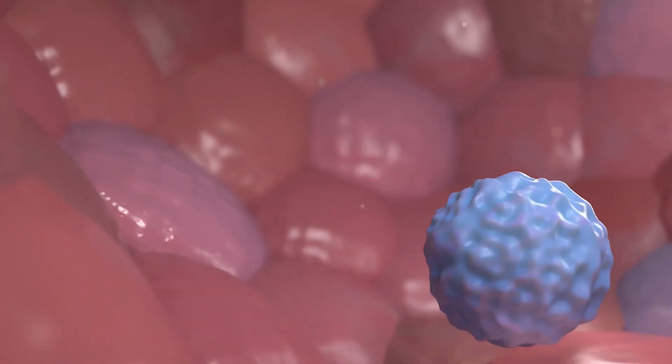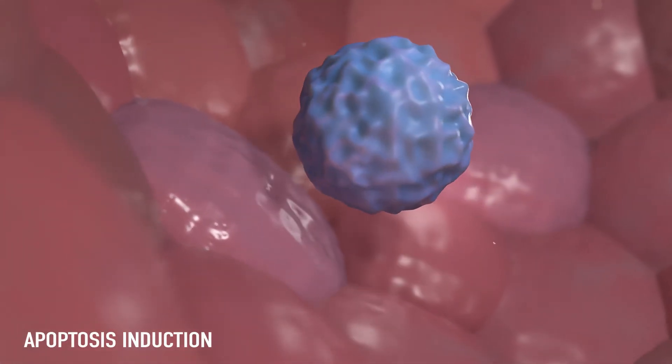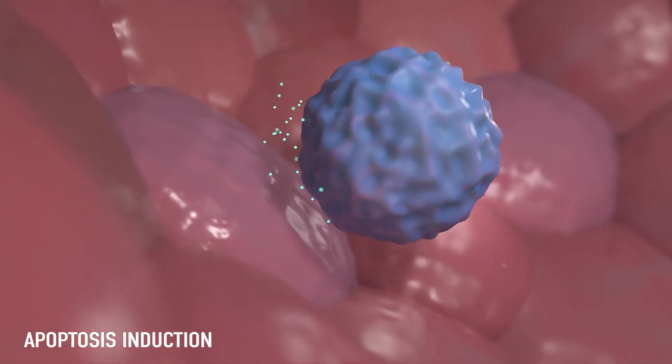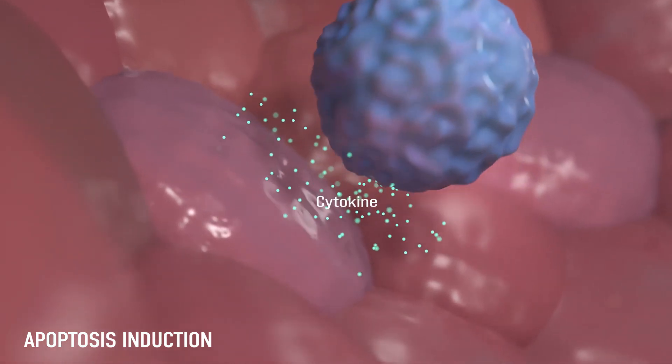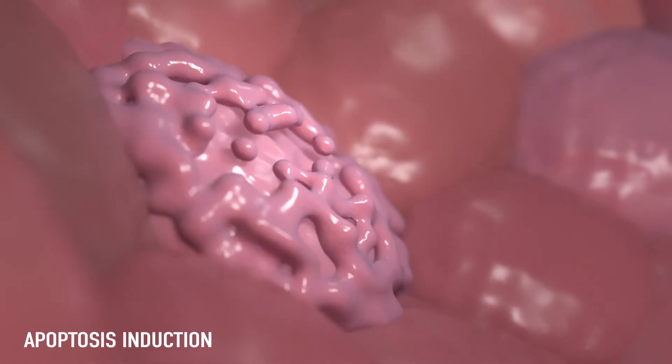In addition, activated cytotoxic T cells recognize the infected cells when an actual virus infection occurs and secrete a signaling substance called cytokine to induce apoptosis.